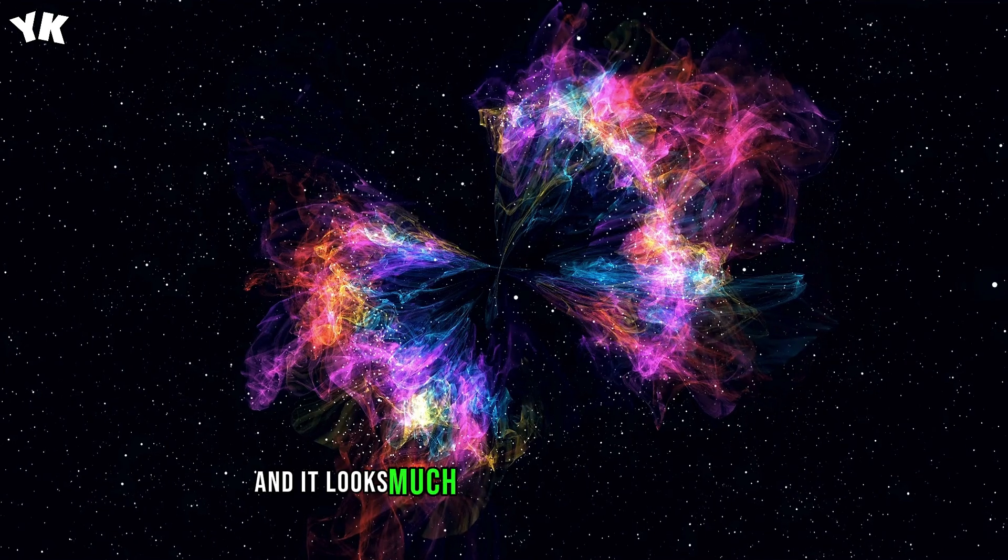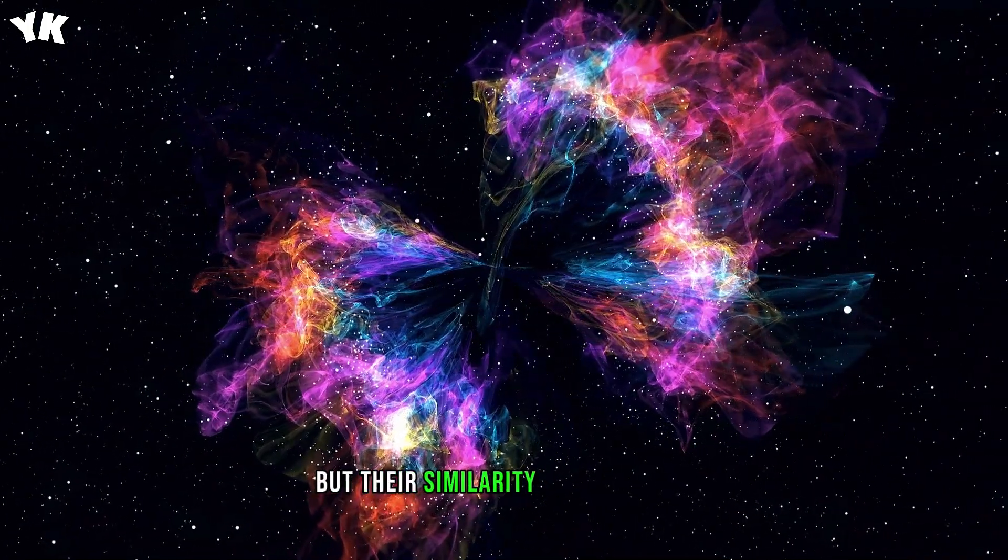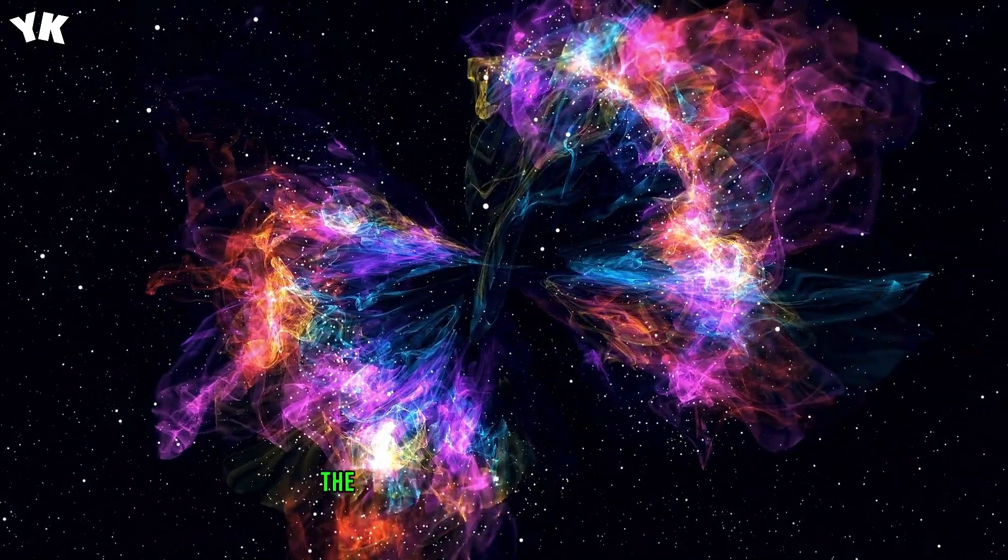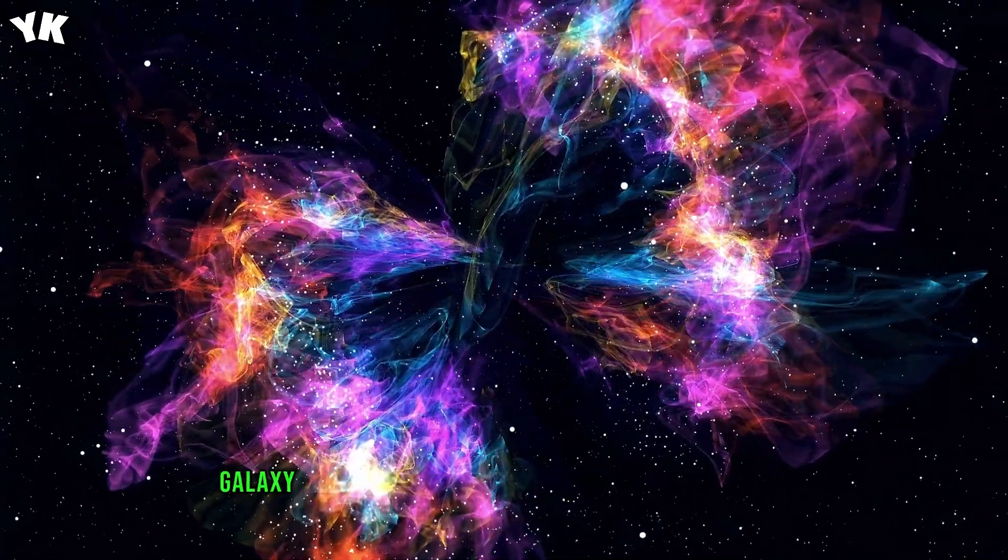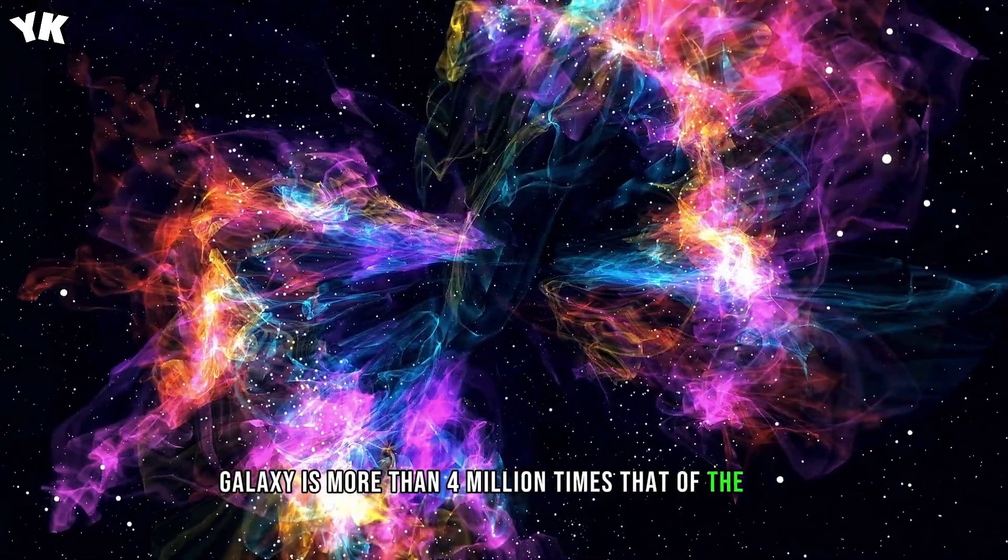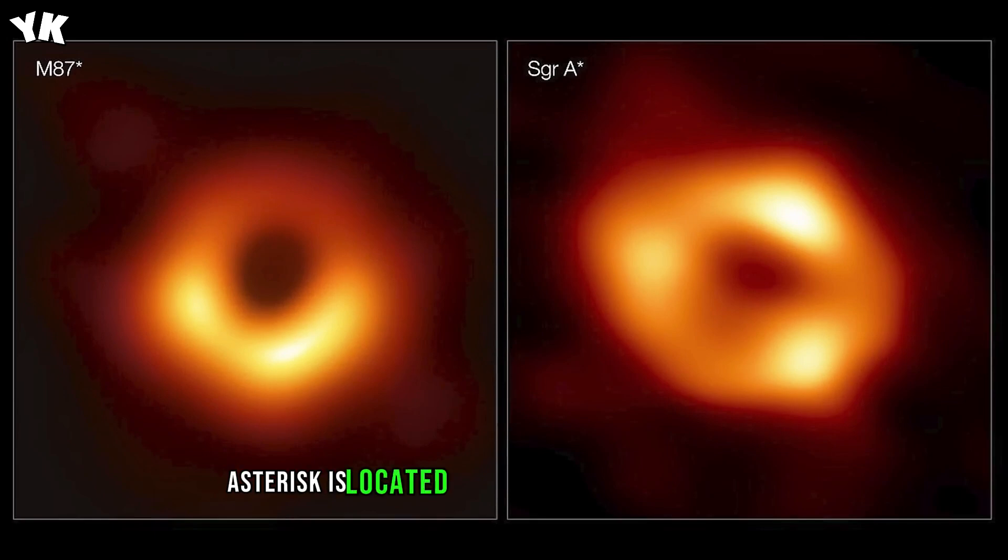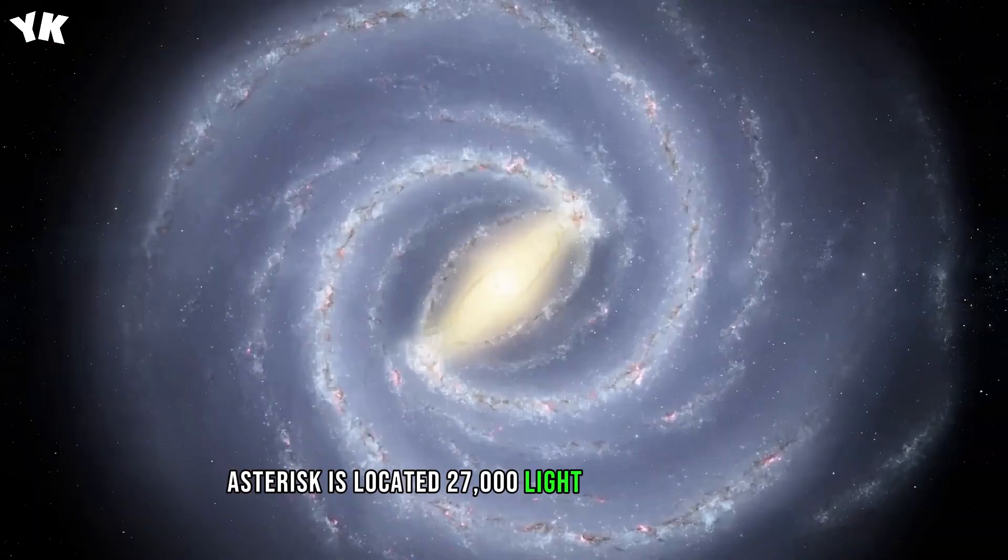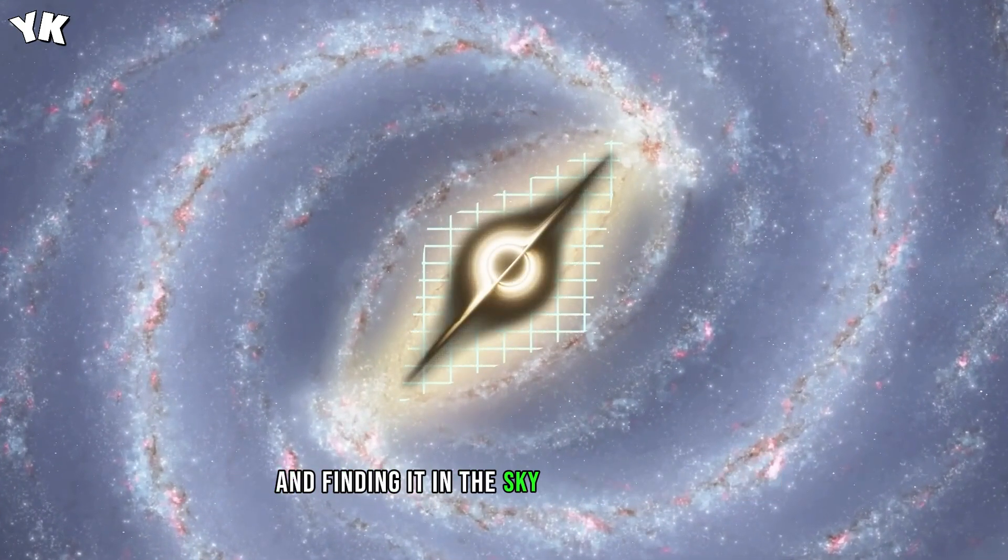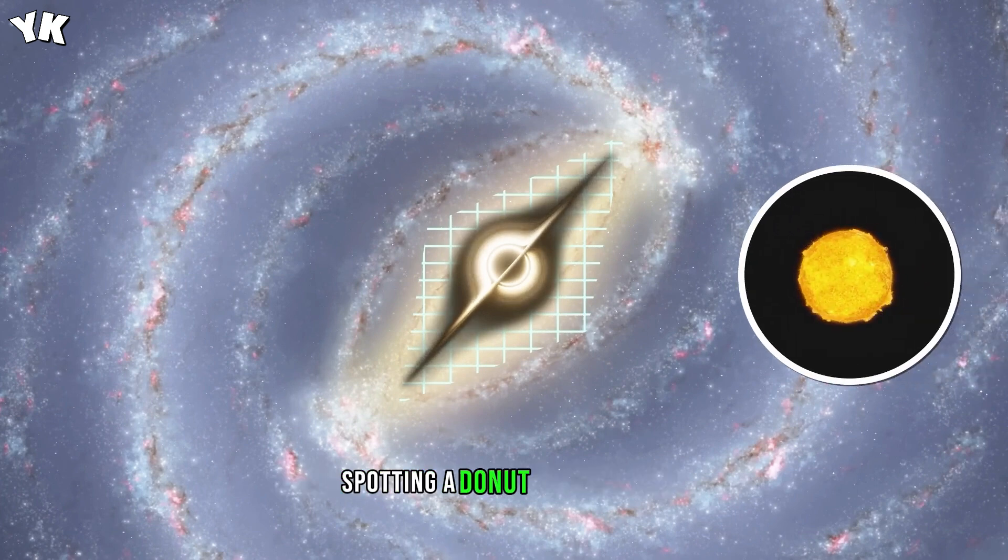The mass of the black hole in our galaxy is more than 4 million times that of the sun. Sagittarius A asterisk is located 27,000 light-years from Earth, and finding it in the sky is no easier than spotting a donut on the moon. But Messier 87 is much further, about 50 million light-years away.